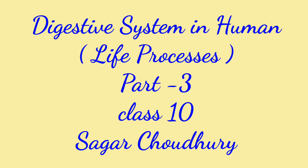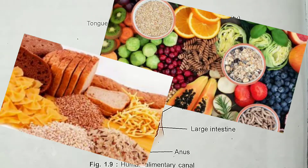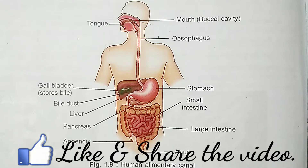Hello students. Today in this session I am going to talk about nutrition in humans. Generally the food that we consume contains highly complex substances like carbohydrates, proteins, fats, vitamins and minerals. These substances cannot be utilized as such by our body. They cannot be directly absorbed and must be broken down into simpler substances so that they can be easily absorbed and transported to various parts of our body through blood.